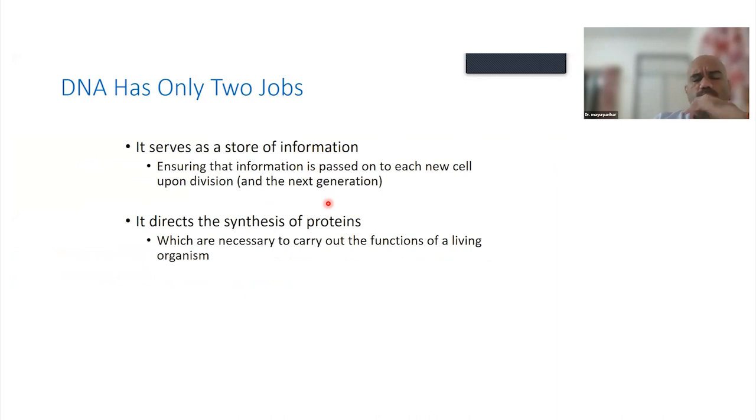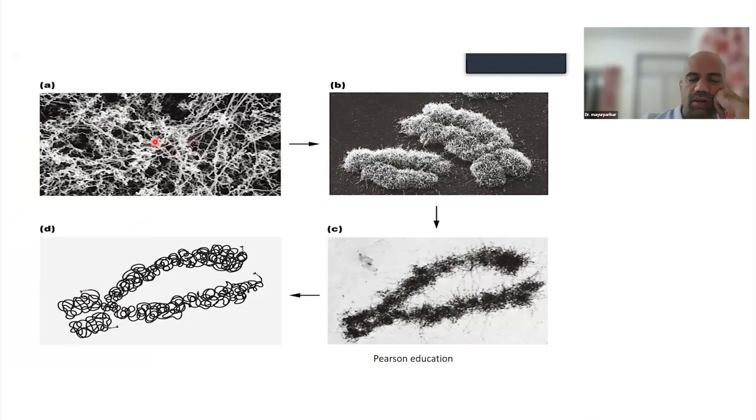When you look at DNA, it just has two jobs. One, it serves as a store of information. It codes for RNA that codes for proteins, and these proteins are essential for the functions. And the second job is to ensure that all this information is passed down to the next generation of daughter cells. In order to do that, the DNA needs to have a dynamic structure. It's in the form of a thread within the nucleus, and as the cell starts dividing, it starts condensing itself.